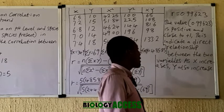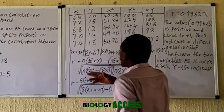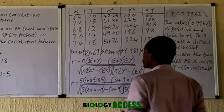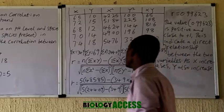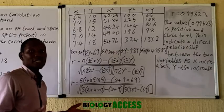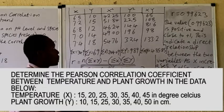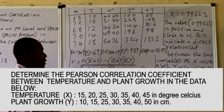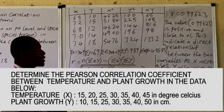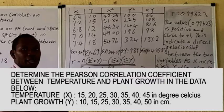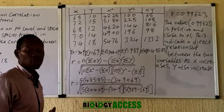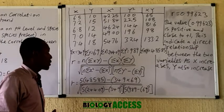This means that as x — the pH — increases, the species richness also increases, confirming a strong direct relationship. This is a basic question in biostatistics and is not a sample data problem. An assignment question is displayed on the screen; attempt it and send your answer to the channel email, biologyassets@gmail.com. Thank you very much.